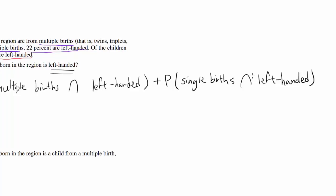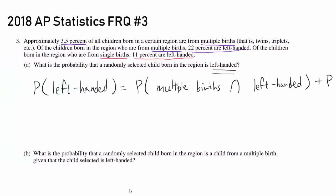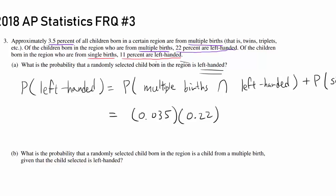So let's find the respective probabilities and add them up. For the first one, the probability that you are from multiple births is 3.5% or 0.035. And out of those, there is a 22% chance that you are left-handed, so you multiply this by 0.22. That takes care of the first one.